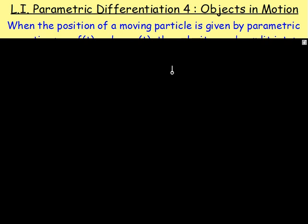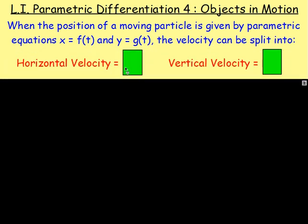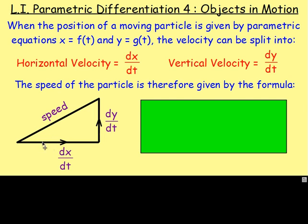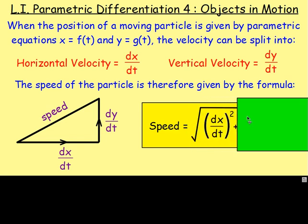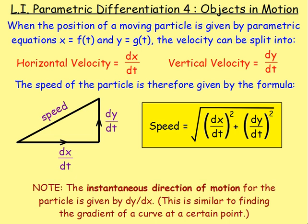If the position of a moving particle is given by parametric equations where x is a function of t and y is another function of t, you can work out the velocity. The horizontal velocity is dx/dt and the vertical velocity is dy/dt. To get the resulting speed, you use Pythagoras: speed equals the square root of (dx/dt)² + (dy/dt)². The instantaneous direction of motion is given by dy/dx, similar to finding the gradient of a curve at a point.